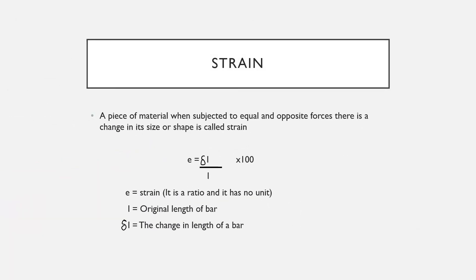Now we are going to discuss the first part, that is strain. A piece of material when subjected to equal and opposite forces, there is a change in its shape and size — this is called strain. Strain is calculated as E equals delta L divided by L into 100. E is the strain; it is a ratio and has no unit. L is the original length of the bar and delta L is the change in length.